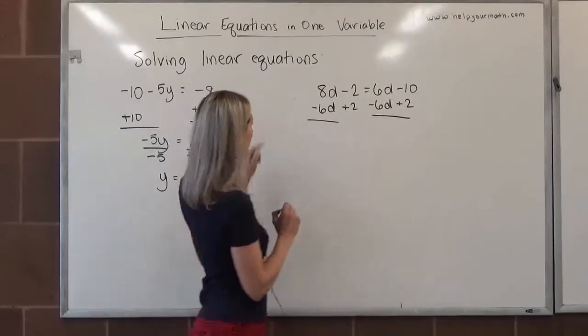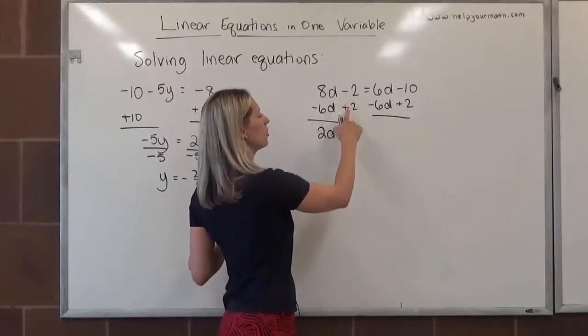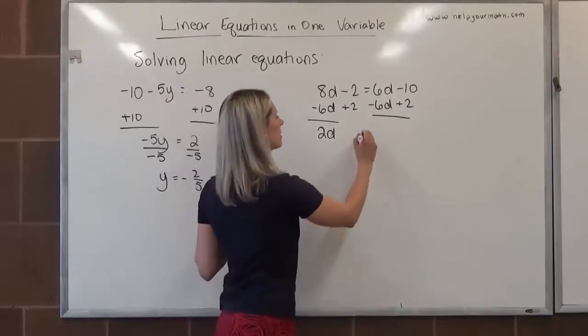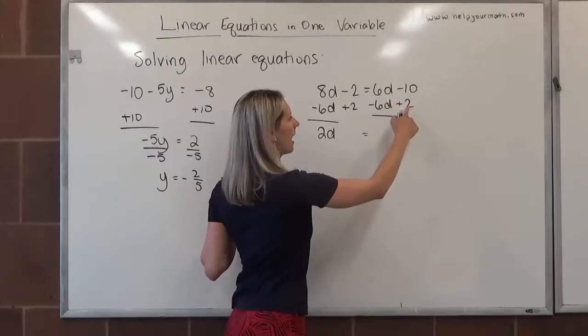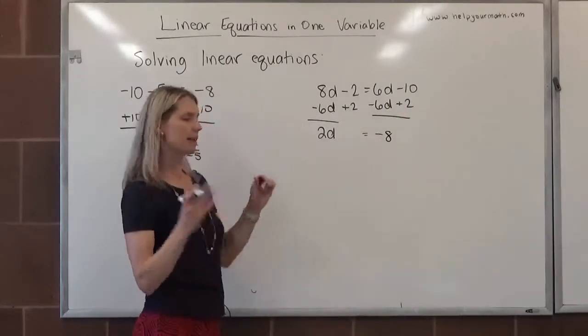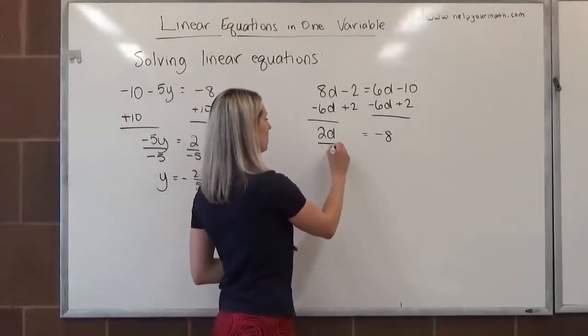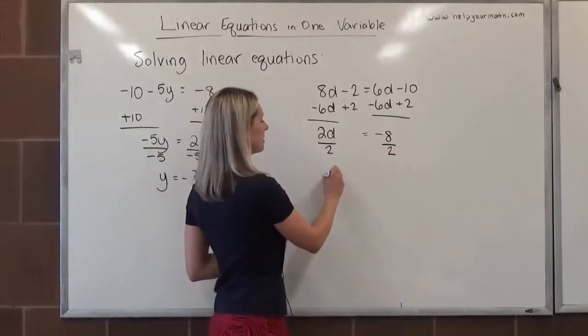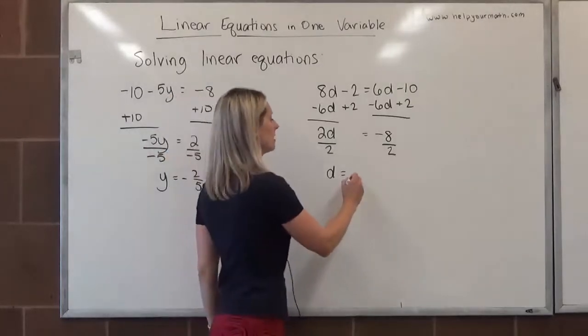Then here, 8d minus 6d is 2d. Negative 2 and positive 2, that makes plus 0. 6d minus 6d is 0, and then negative 10 plus 2 is negative 8. From here, I want to get d by itself. It's being multiplied by 2, so to undo multiply by 2, I will divide by 2. Divide both sides. Negative 8 divided by 2 is negative 4.